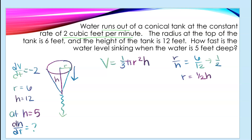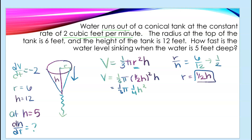Since the radius is half the height, I can eliminate radius from the equation. The volume of a cone is one-third π r² h. Substituting r = h/2, I get V = one-third π (h/2)² h = one-third π times one-fourth h³, which simplifies to one-twelfth π h³. I'm looking for dh/dt.